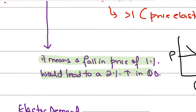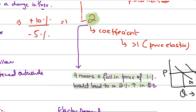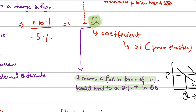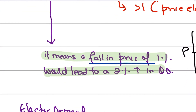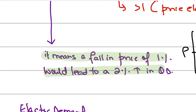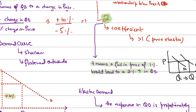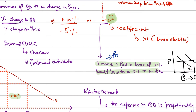What does a PED value of minus 2 mean? It basically means that a fall in price of 1% would lead to a 2% rise in quantity demanded. For every 1% fall in price, quantity demanded rises by 2% — that is what the PED value of minus 2 is telling you.